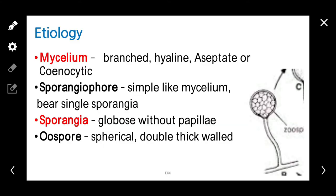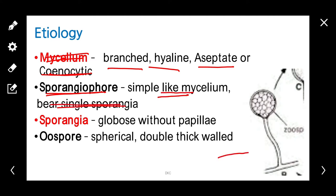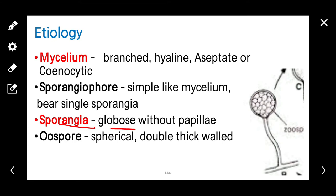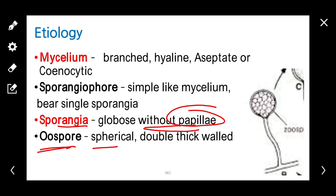Coming to etiology. Pythium belongs to lower fungi, subdivision Mastigomycotina. The mycelium is branched, hyaline, and aseptate or coenocytic. The sporangiophores are simple and bear single sporangia. The sporangia are globose without papillae. There is a difference between sporangia of Pythium and Phytophthora: Pythium sporangia are without papillae, while Phytophthora sporangia contain papillae. Oospores are spherical and double thick-walled. Oospores are sexual spores.